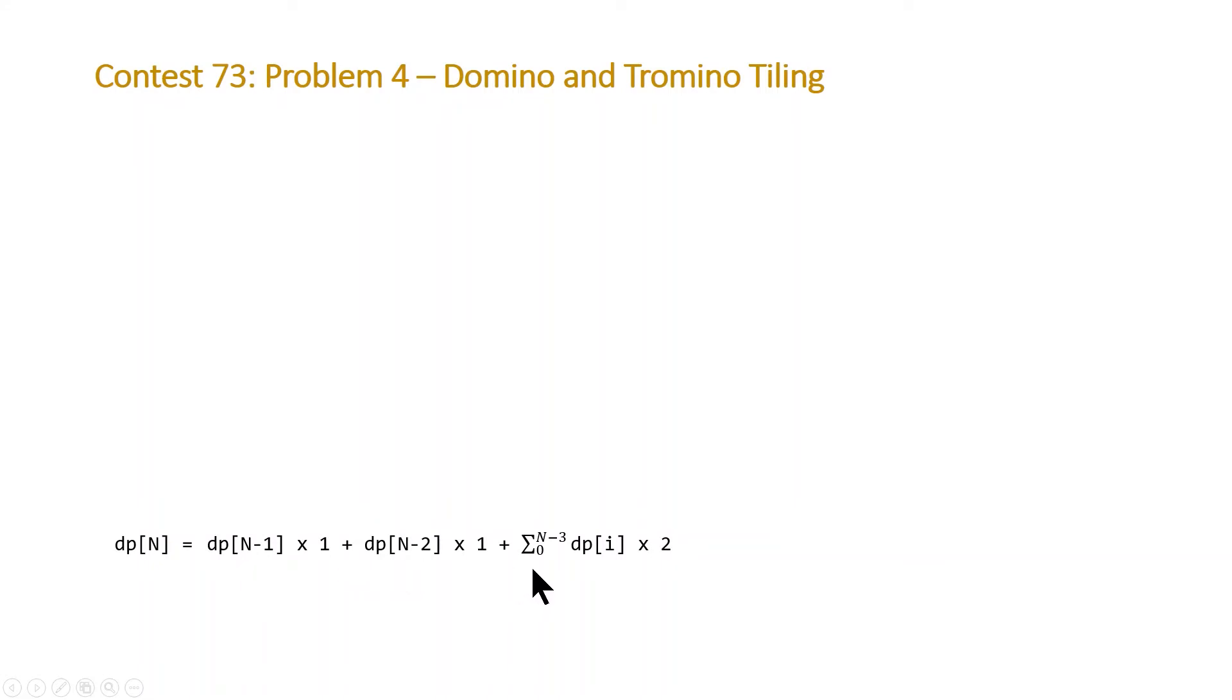So we have n minus 1 here, n minus 2, and n minus 3. And this is multiplied by 2. So let's move this to the center of the screen. We can simplify this by dropping the multiplications by 1 and moving the 2 outside the summation.